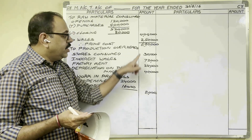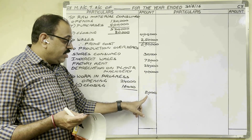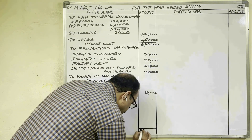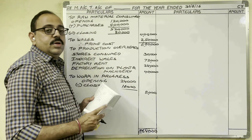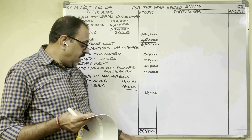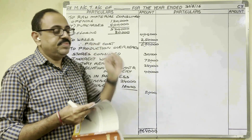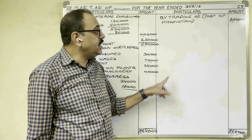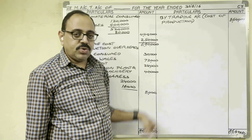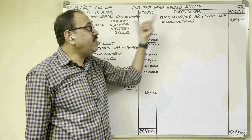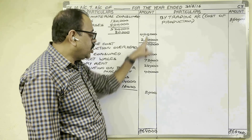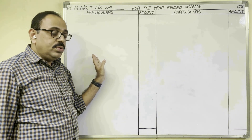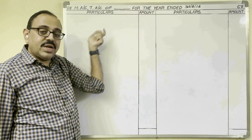So the debit side is complete. Now prime cost, indirect expenses, and work in progress final balance — these amounts are added and the total is 8,64,000 rupees. The credit side has nothing, therefore the same amount appears as cost of production transferred to trading account. Manufacturing account always shows a debit balance, meaning debit total should be more than credit total. Our answer is cost of production, so this amount is transferred to the trading account.